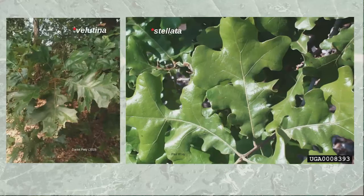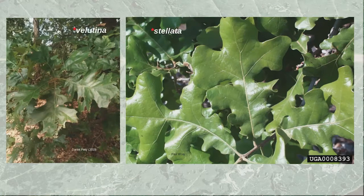Quercus velutina, black oak, grows 50 to 80 feet in sun, dry to medium soil. Part shade is also okay. It's a good street tree, has good fall color, is usually disease-free, and grows in less-than-ideal situations, which is why it's been recommended as an oak to plant around your yard.